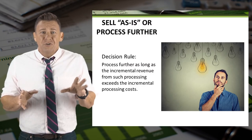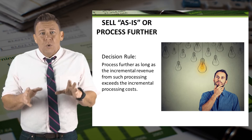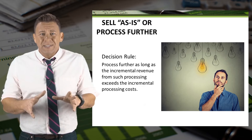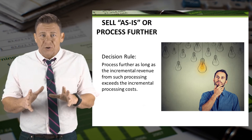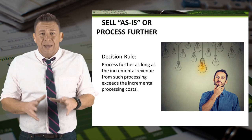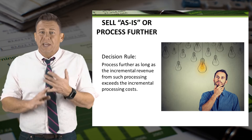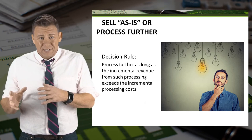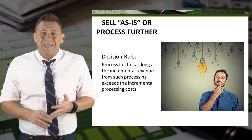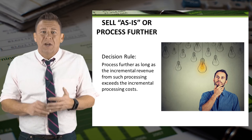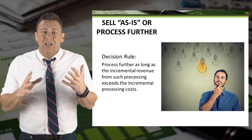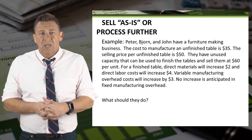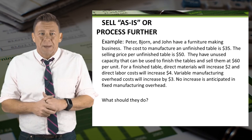The decision rule we use is that we should process further as long as the incremental revenue from such processing exceeds the incremental processing costs. So let's look at an example.